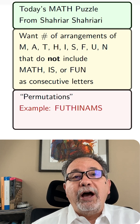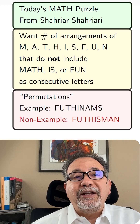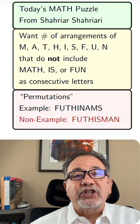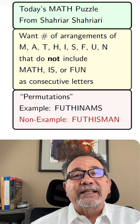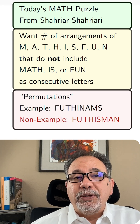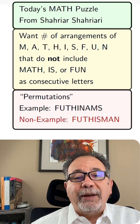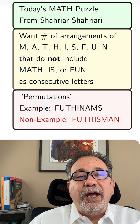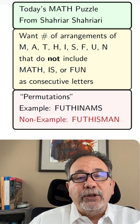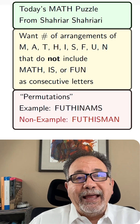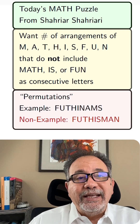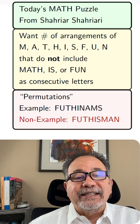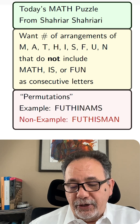Want to know how many of them there are? But you don't want to count an arrangement such as F-U-T-I-S-M-A-N, since the word IS appears somewhere in that arrangement. One more time — how many permutations of the letters M-A-T-H-I-S-F-U-N do not include the word math, the word is, or the word fun as consecutive letters?